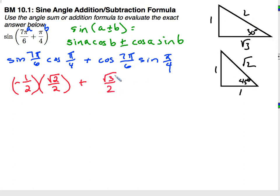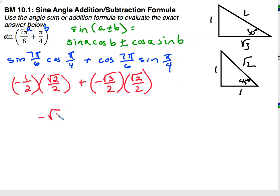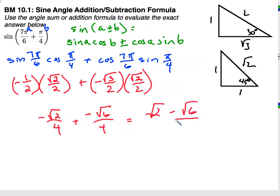For cosine, adjacent over hypotenuse gives √3/2, but again that's for the reference angle π/6. Since 7π/6 is in quadrant 3, cosine is negative. And the sine of π/4 is opposite over hypotenuse, which is √2/2. Now multiplying those, I have negative √2/4 plus negative √6/4, which equals negative √2 minus √6, all over 4. That would be my answer.